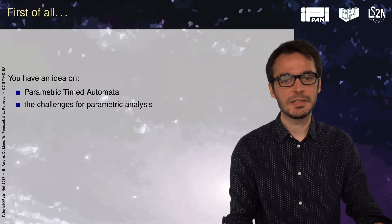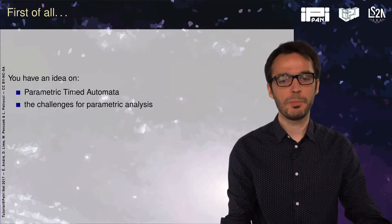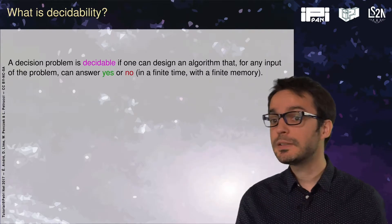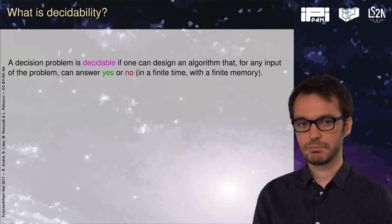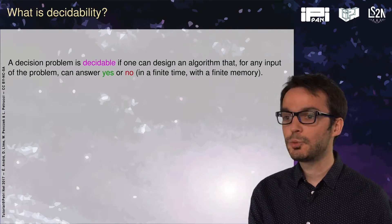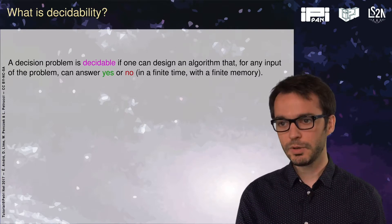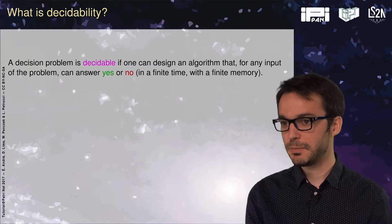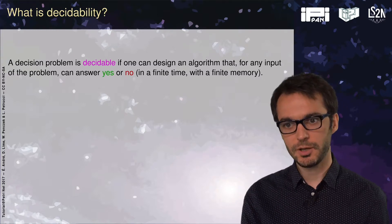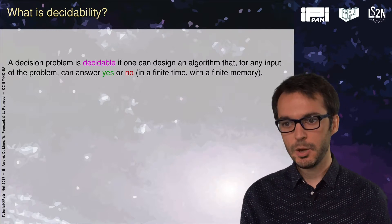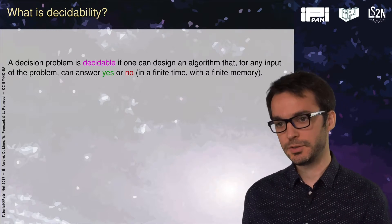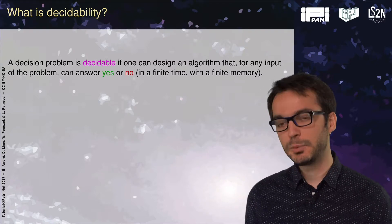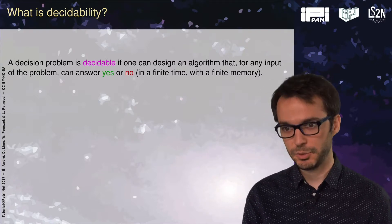Let us now study decidability results for parametric time automata. First, what is decidability? A decision problem is said to be decidable if we can design an algorithm that, for any input of this problem, will answer either yes or no — in a finite time and with a finite memory.